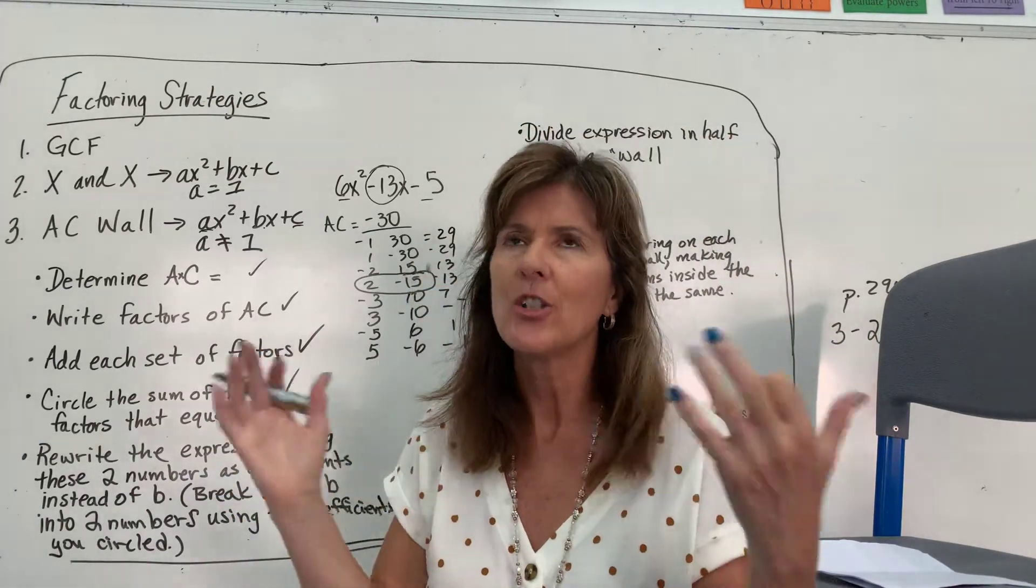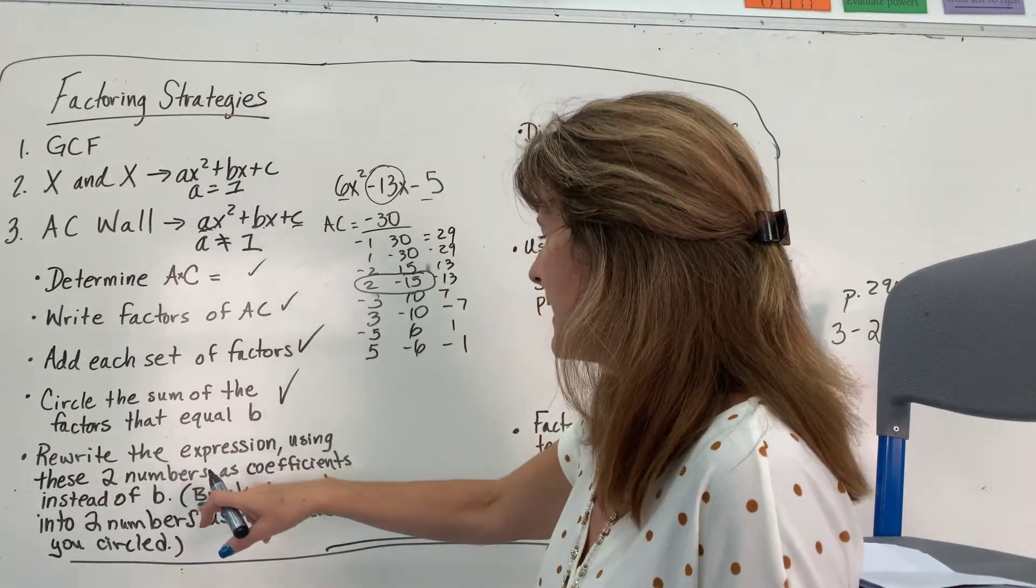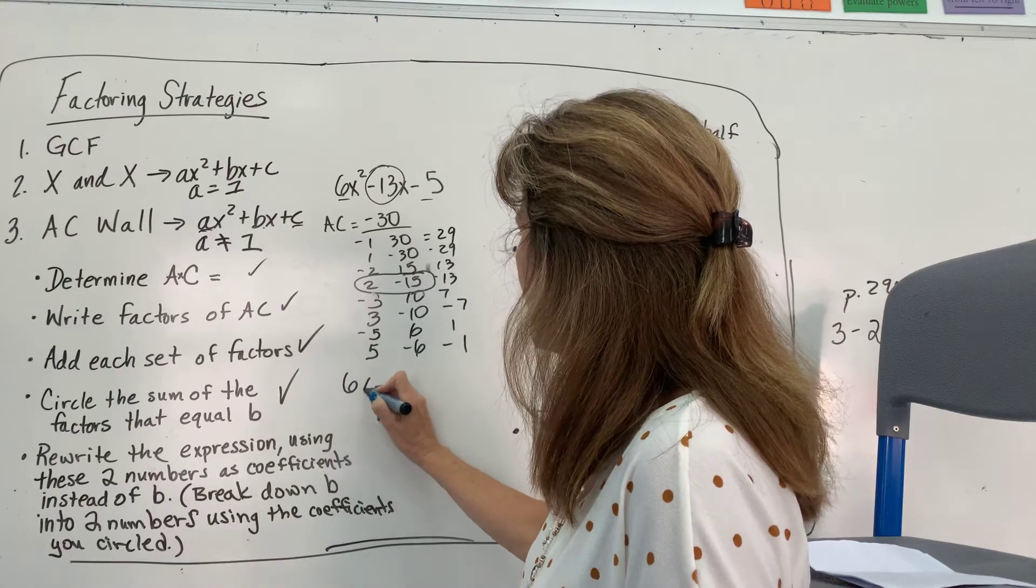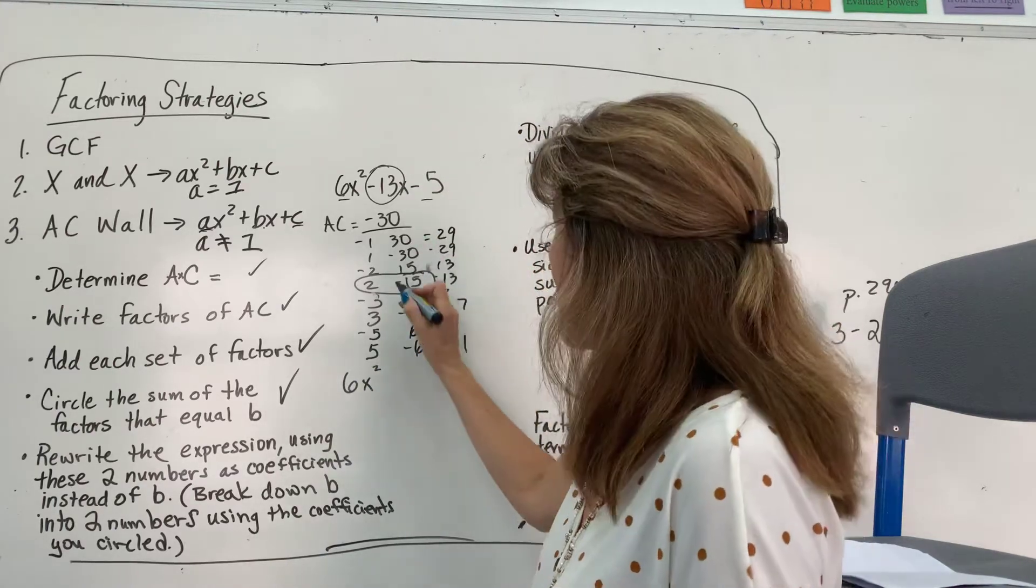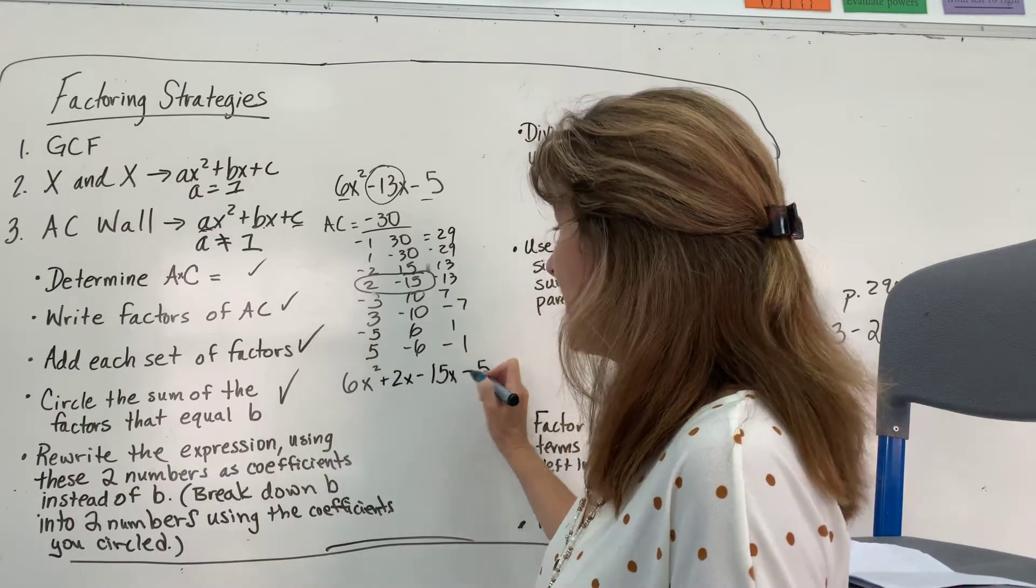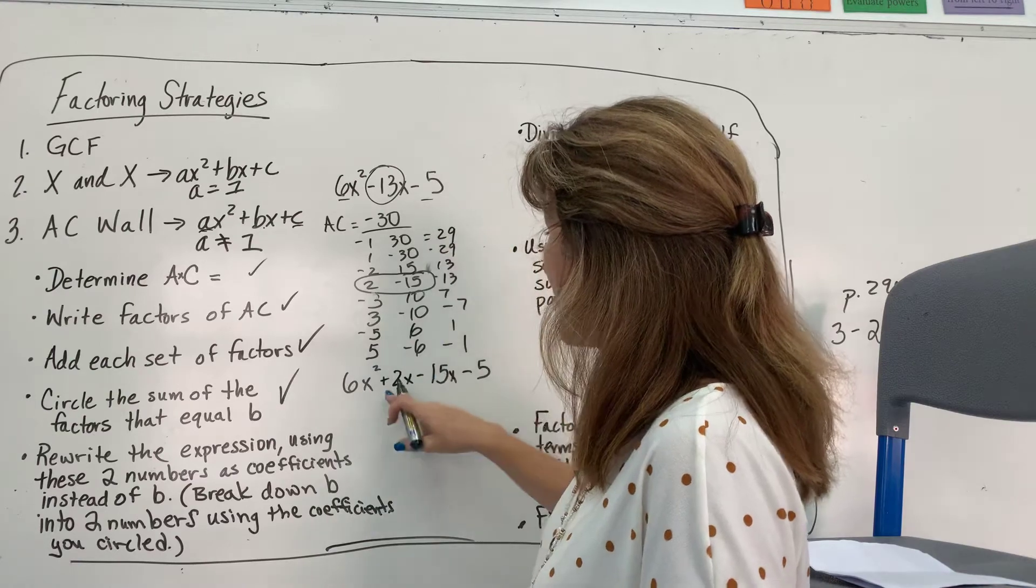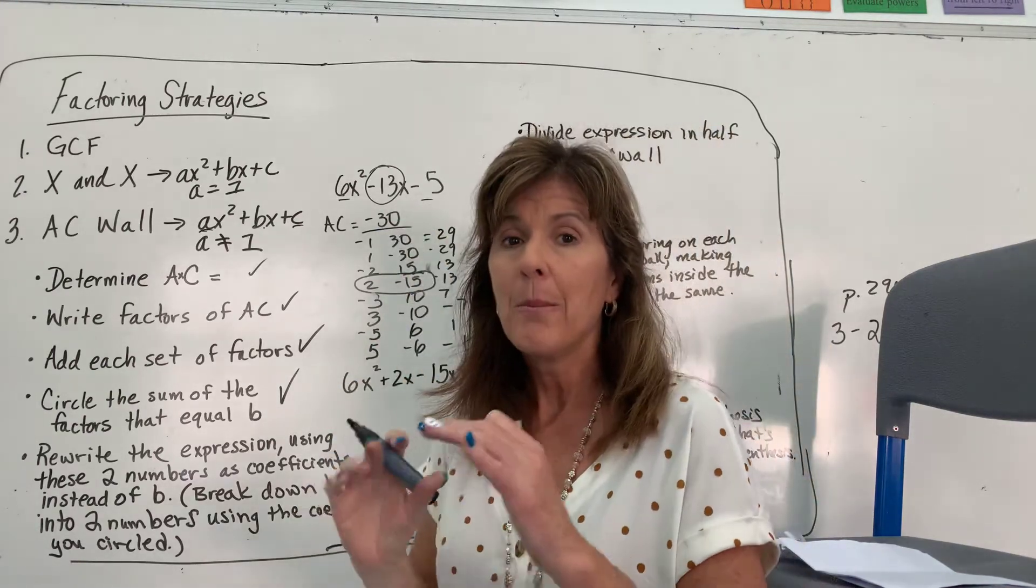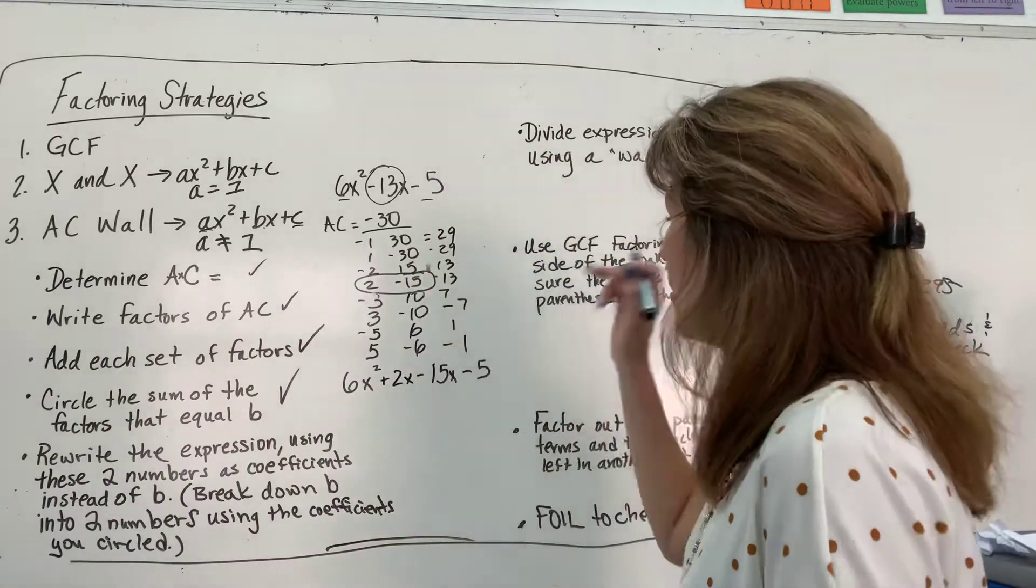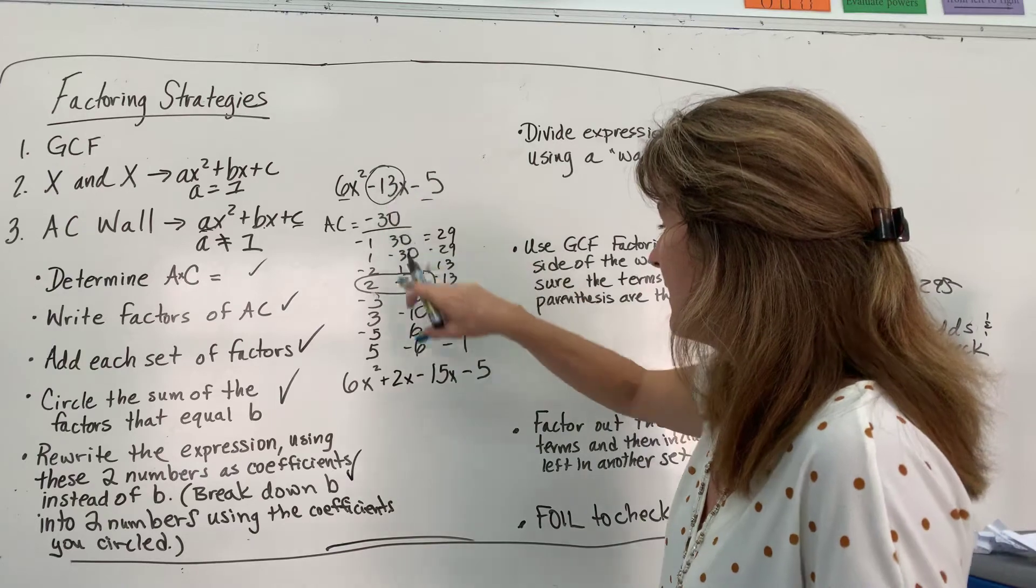Rewrite. This is the part that's confusing. It's hard to explain. It's easy to do. Rewrite the expression using these two numbers, 2 and negative 15, as coefficients instead of B. So, basically, I'm going to break down B into these coefficients. So, I'm going to rewrite it. 6x squared. And instead of writing negative 13x, I'm going to write plus 2x minus 15x minus 5. You will see that this expression is the same as this expression. I collected like terms. I had negative 13x. But, I'm expanding it. And you'll see why in a minute.